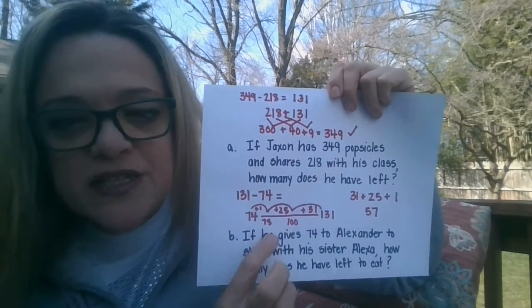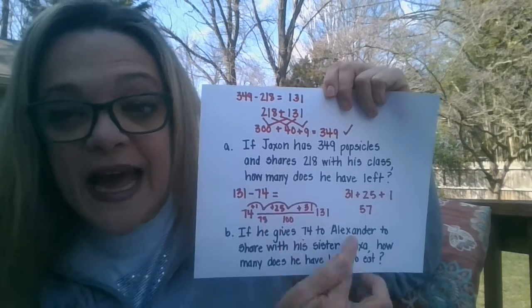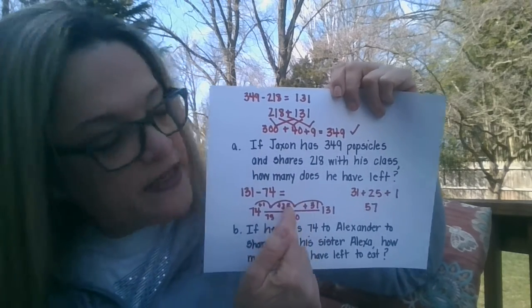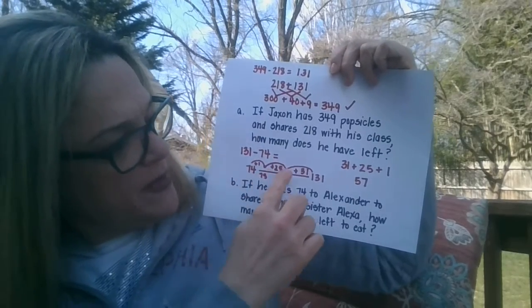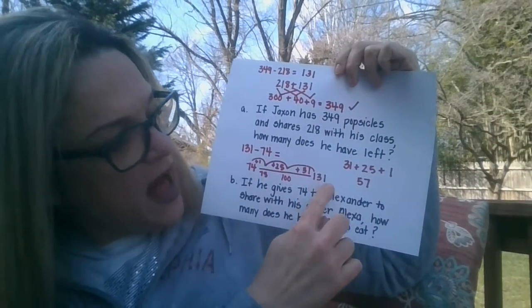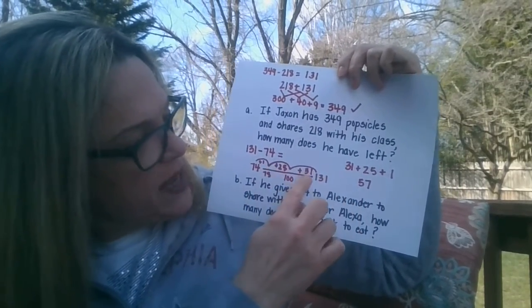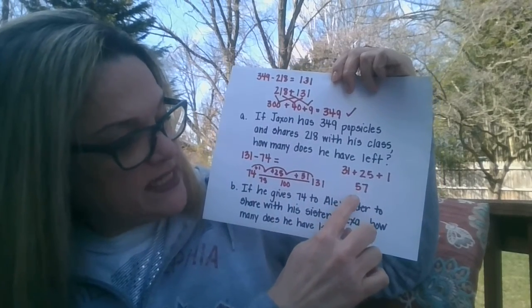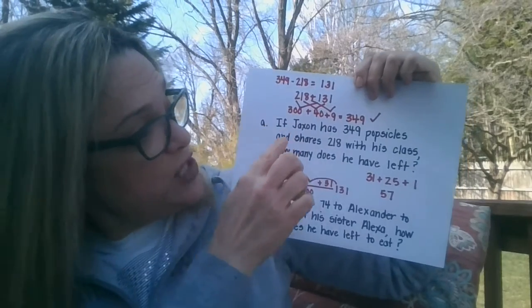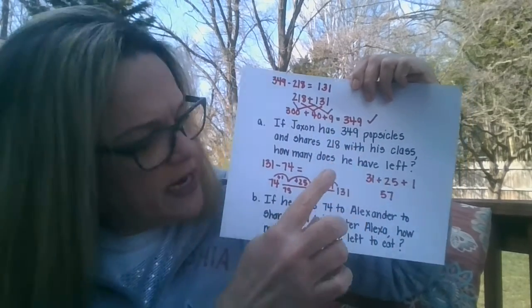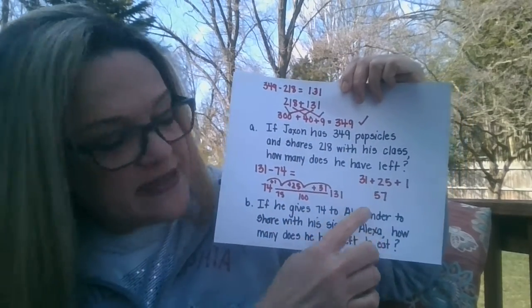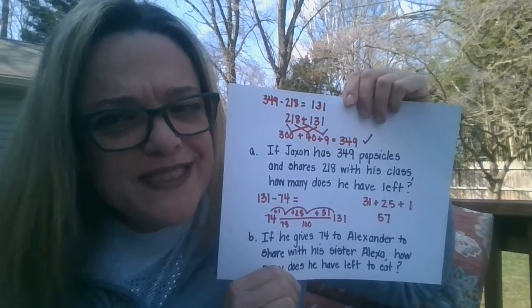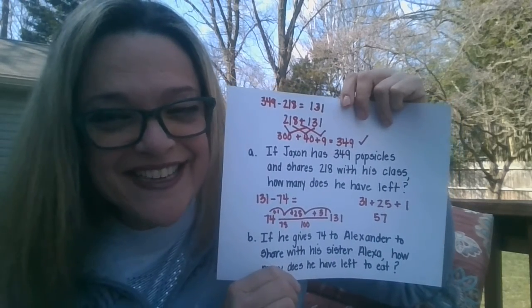Then Jackson shared them again with Alexander and his sister Alexa, and when he took those away, I used my number line and I counted up. When I counted my 31, 25, and 1 that I added, I got 57, which means from Jackson starting with 349, he ended up with 57 popsicles. I'd say he's pretty, pretty, pretty kind.